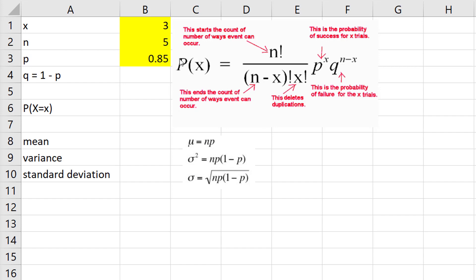This is the formula. If you want to know the probability that you get three successes, the formula, as you can see, looks pretty complicated.